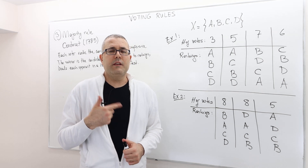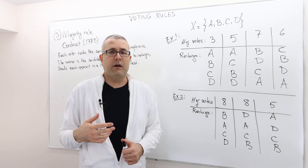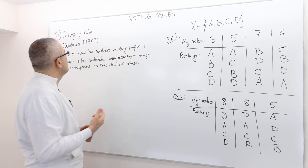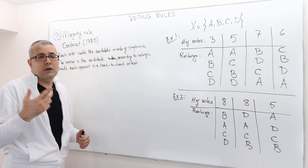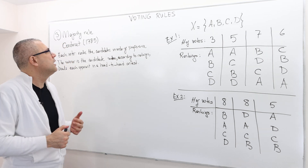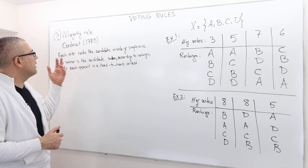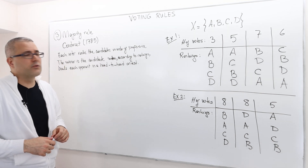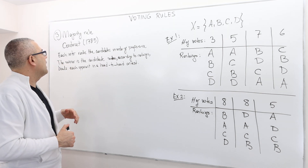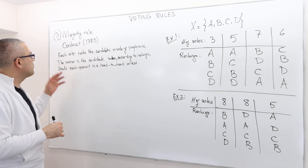In this episode, I'm going to talk about majority rule, sometimes also known as Condorcet rule. It was advocated by Condorcet in 1785. So in reality, how does it work?